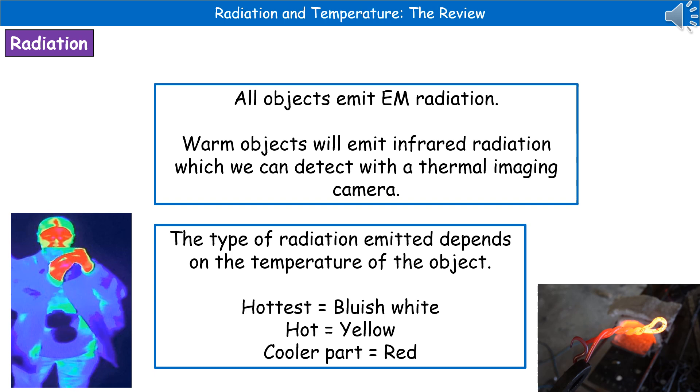What we find is that the type of radiation emitted depends on the temperature of the object. When we're thinking about how objects look to us at different temperatures, the hottest objects actually look a bluish white color. Those that are just hot are yellow, and anything that's much cooler is red.